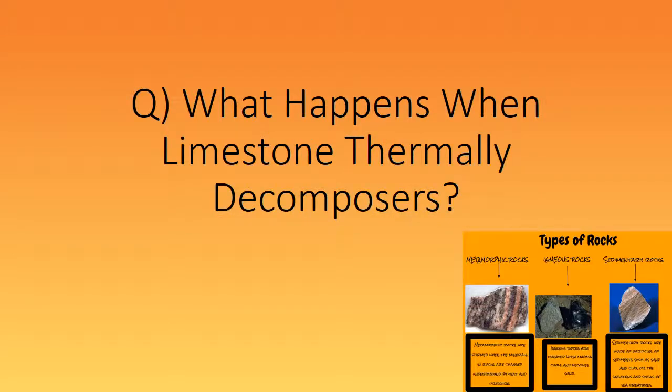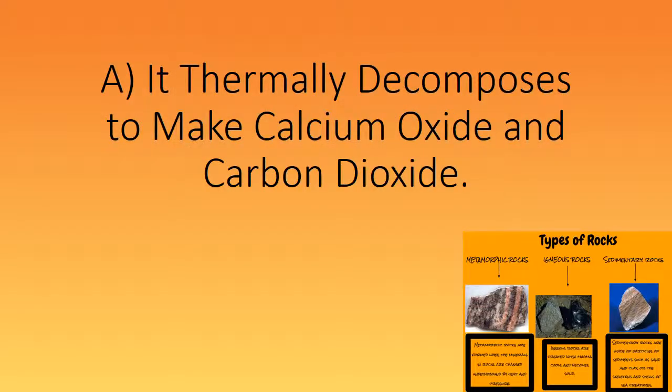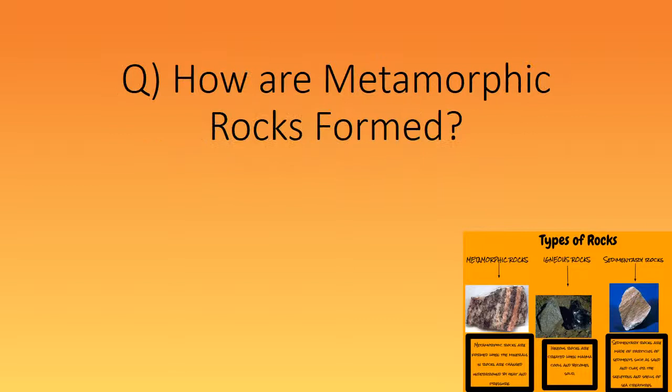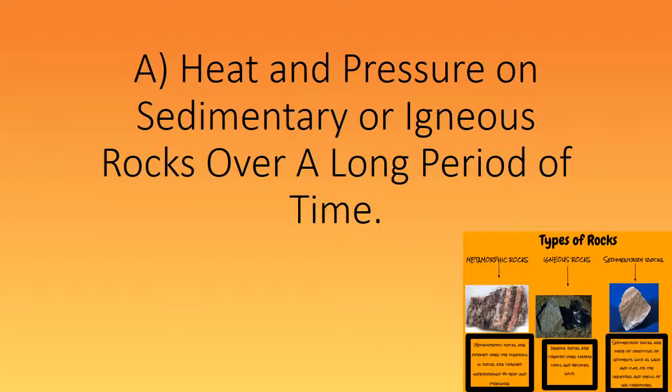What happens when limestone thermally decomposes? It thermally decomposes to make calcium oxide and carbon dioxide. How are metamorphic rocks formed? From heat and pressure on sedimentary or igneous rocks over a long period of time.